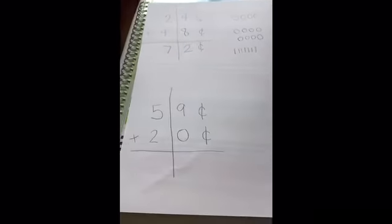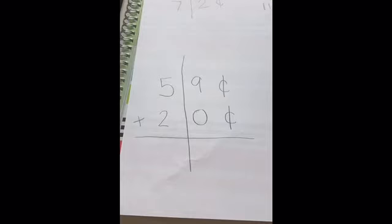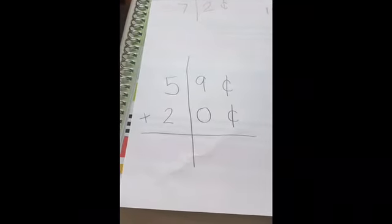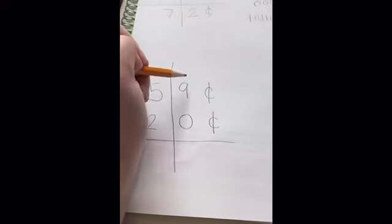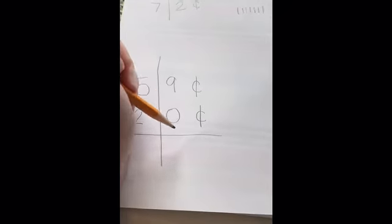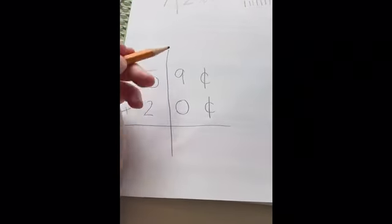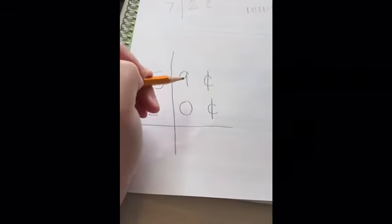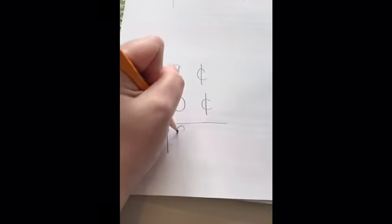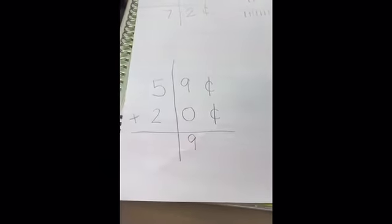Our second problem is fifty-nine cents plus twenty cents. Starting over here in our ones, nine plus zero. Oh, we got lucky. Anything you add zero to stays the same. So my nine goes down.